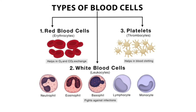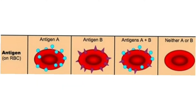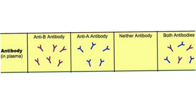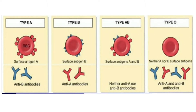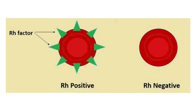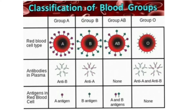Blood has a cellular component, and one type of cell in the blood is the RBC. The surface of the RBC has proteins called antigens, and the plasma has antibodies. Depending on the presence of these antigens and antibodies, human blood is classified into four groups. It is also classified as RH positive and RH negative.